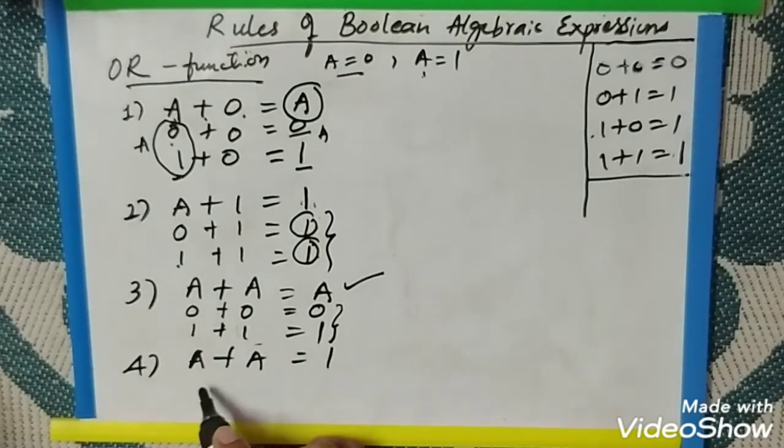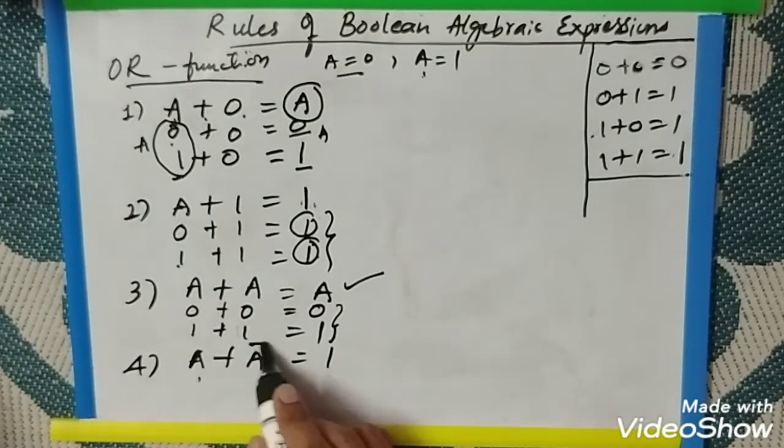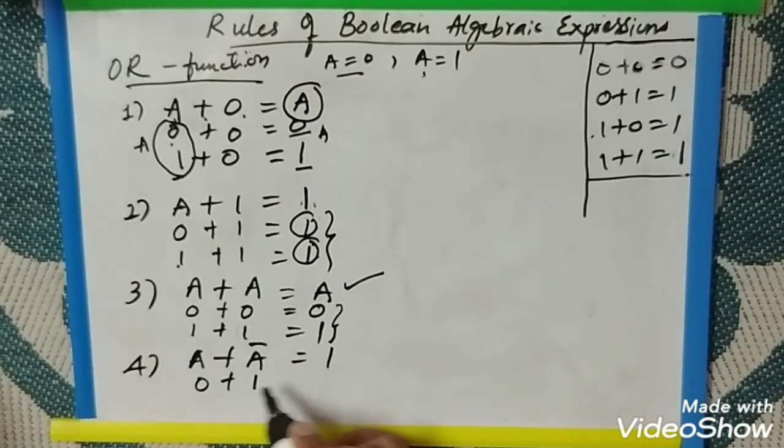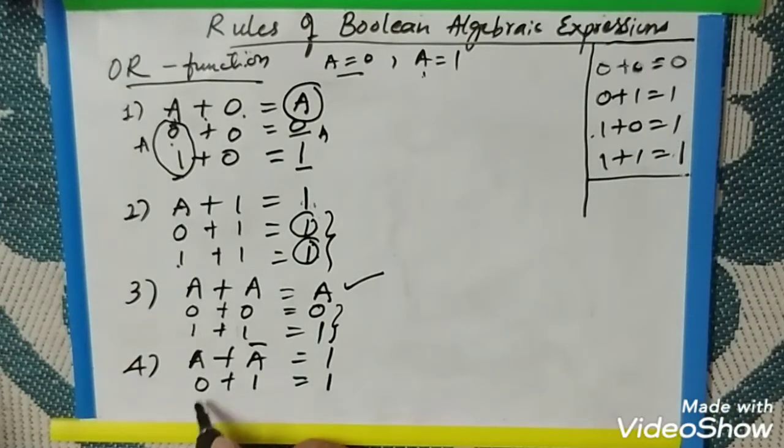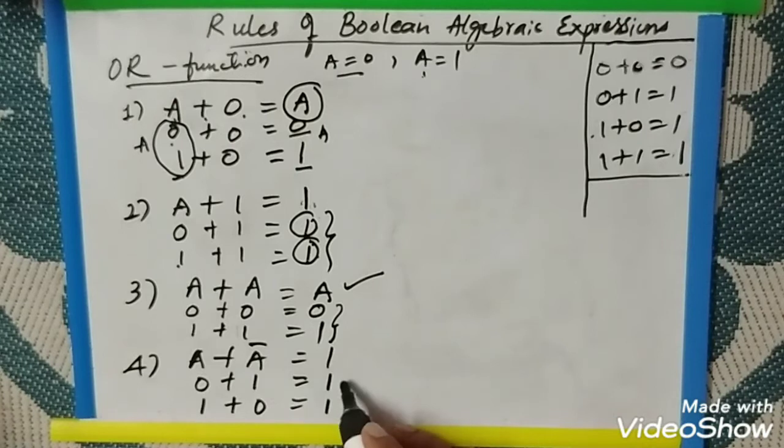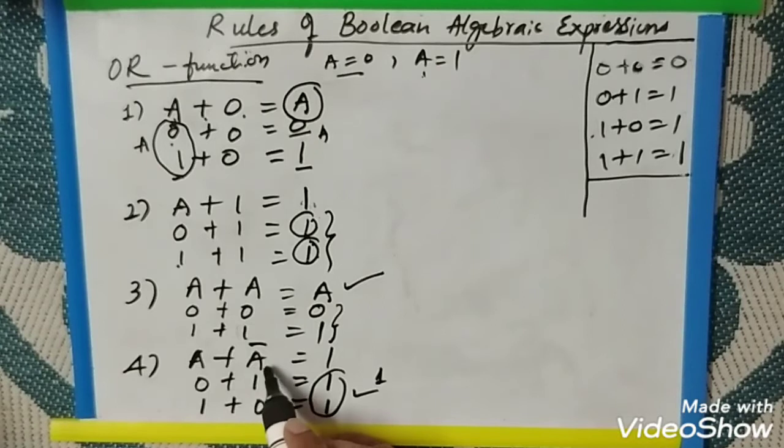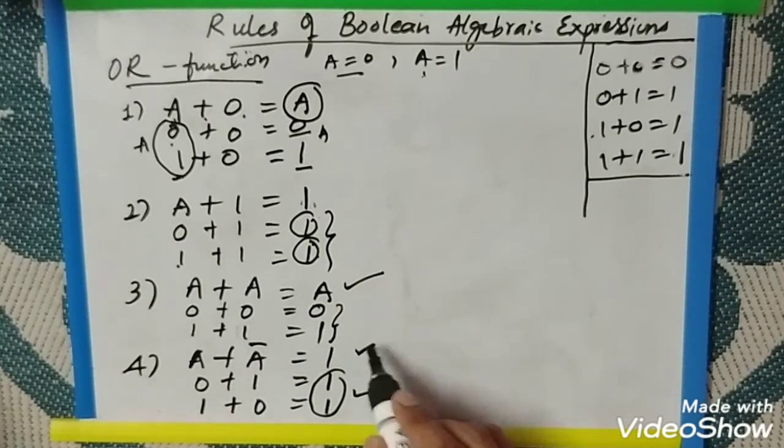Now coming to the last one. If A is 0, A bar will be the complement of 0 is 1. So 0 plus 1 is 1. When A is 1, complement is 0. 1 OR 0 is again 1. That means whether it is 0 or 1, if you are complementing, the answer is always 1. Therefore, A plus A bar is also equal to 1.